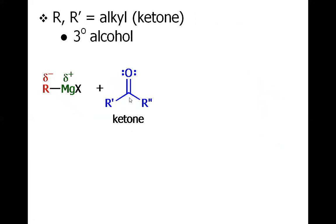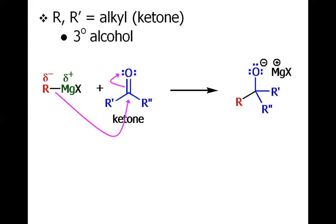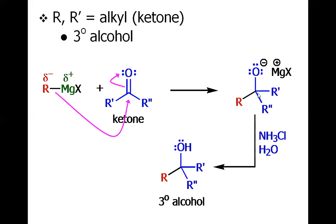When we have a ketone — not formaldehyde, not the other aldehyde, but a ketone — treated with organomagnesium halide or organolithium, there will again be a nucleophilic attack of R⁻ to the carbonyl carbon, generation of the tetrahedral intermediate, quenching by acid, and the tertiary alcohol is obtained. The red R has come from the organometallic source, and the two R groups have come from the ketone, giving the tertiary alcohol.